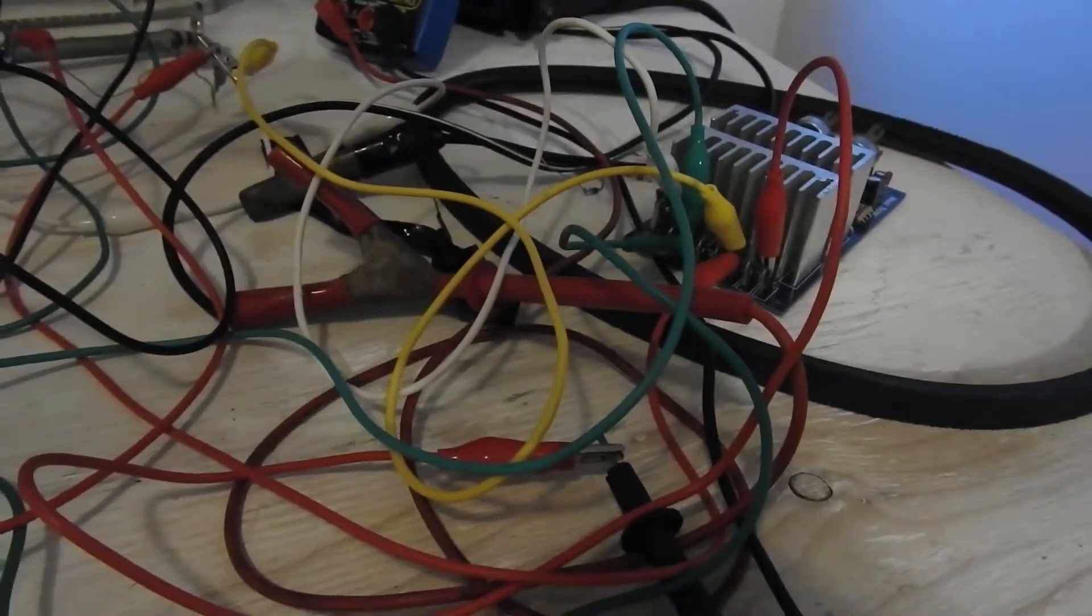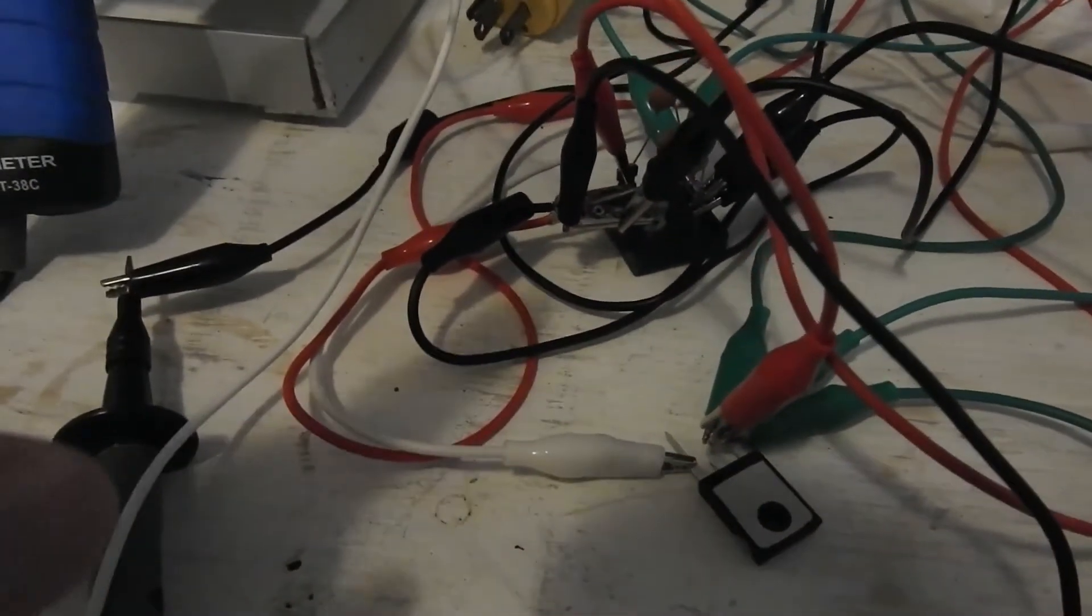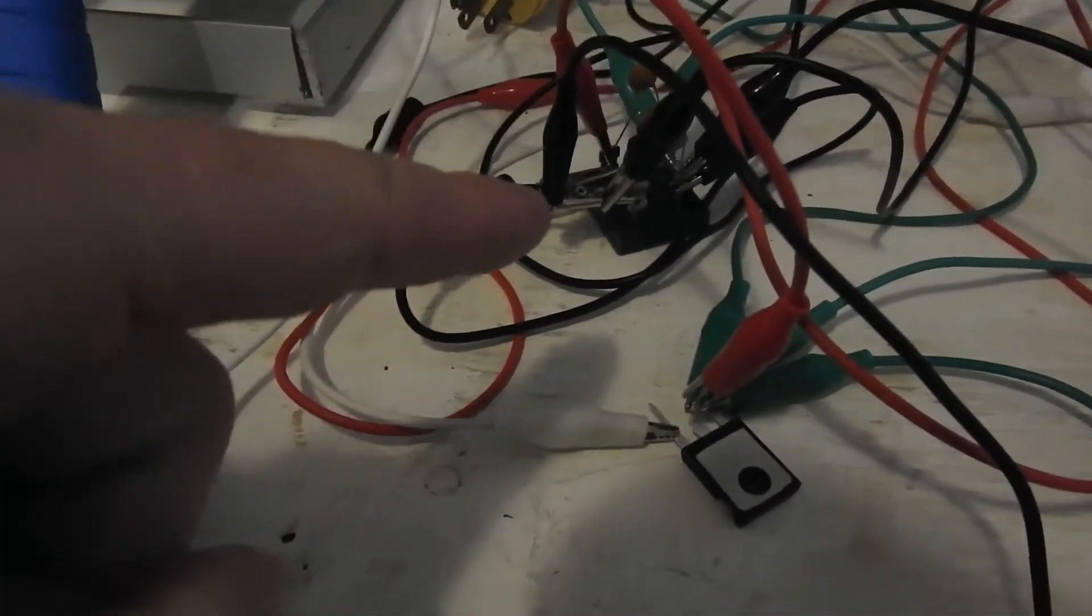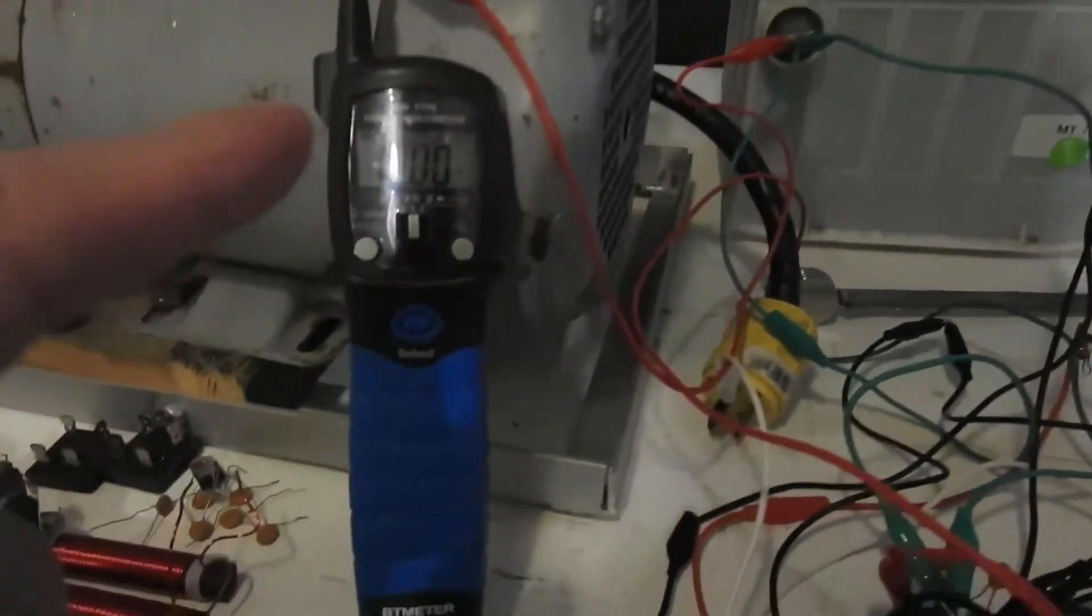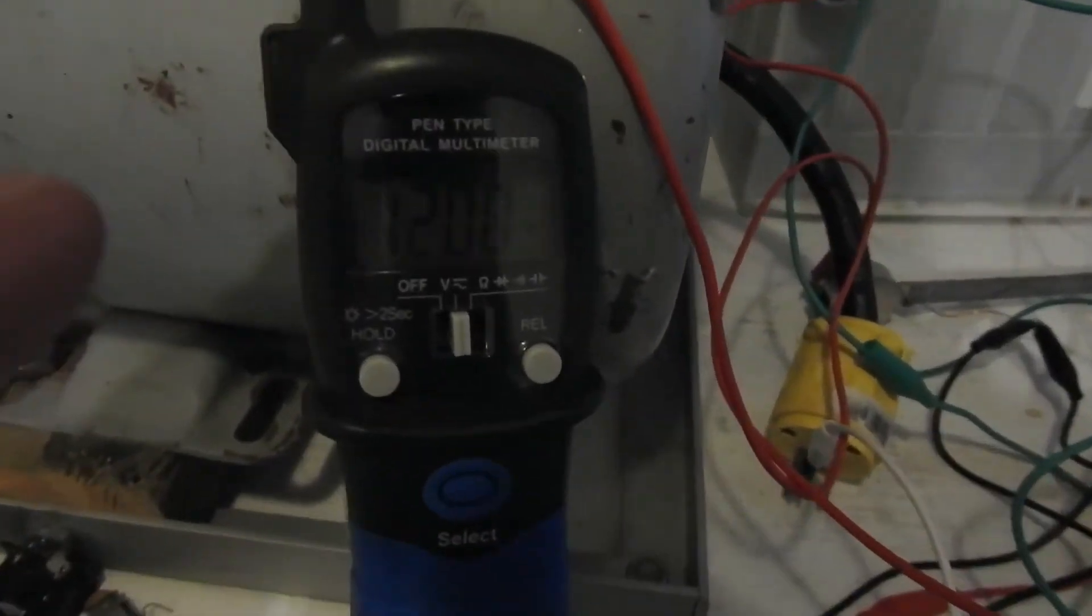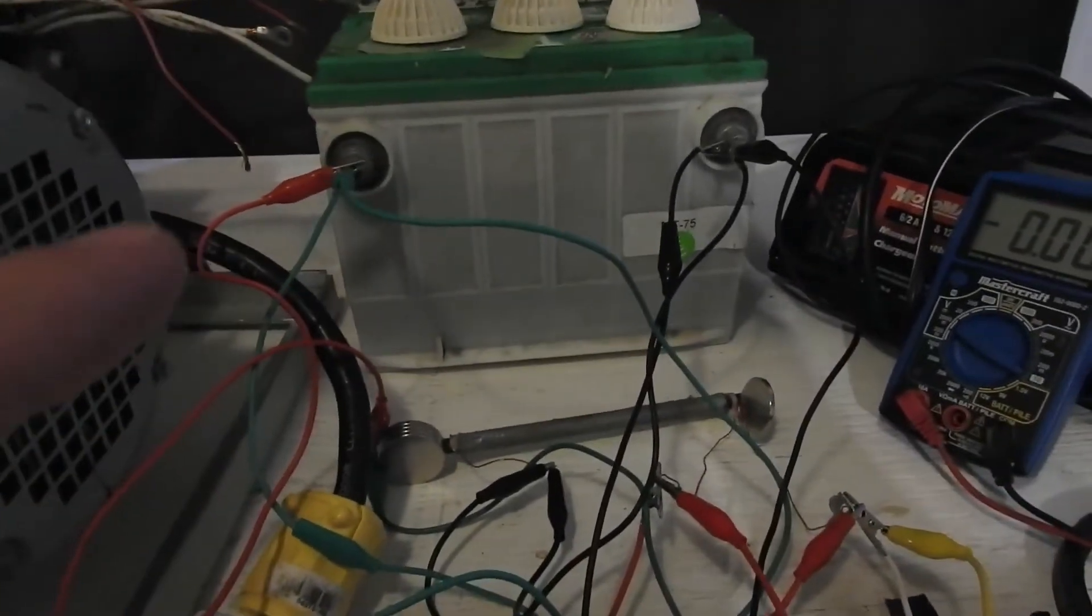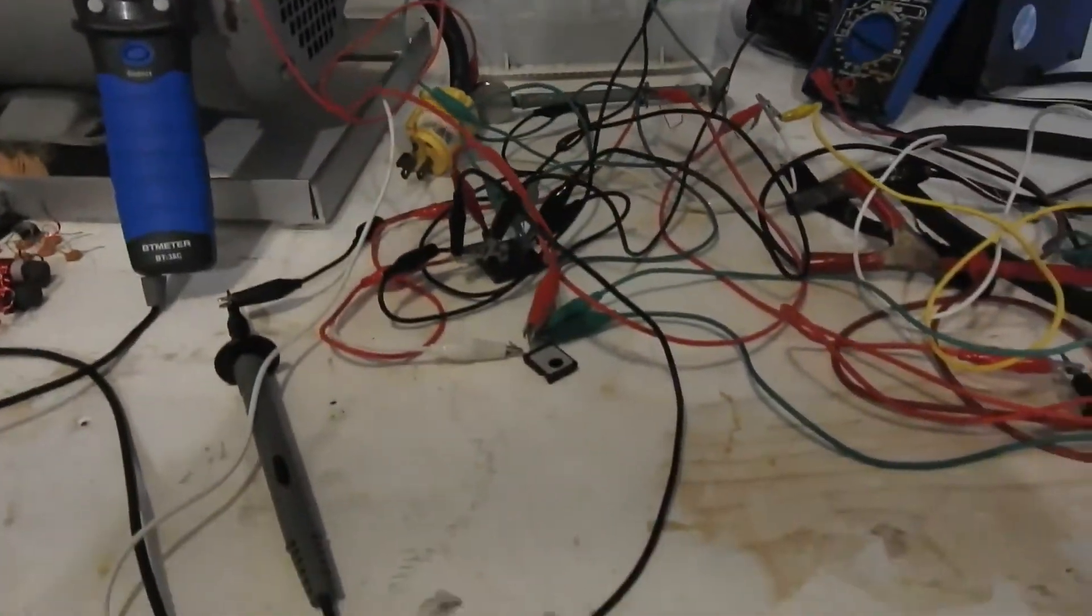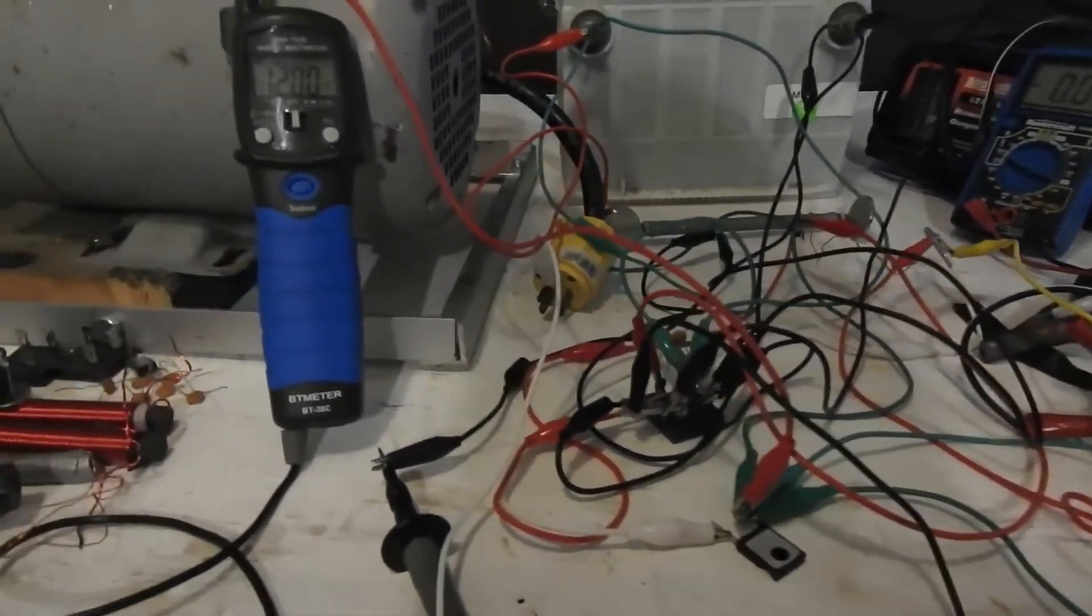The other side comes out and goes through this bridge rectifier and goes into that battery as well. I have this meter which is reading 12 volts on the button, which is hooked up to the battery as well. So that's basically it, plus or minus a few small capacitors.